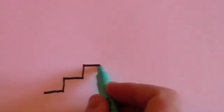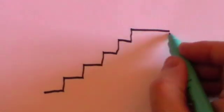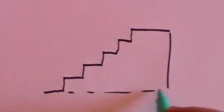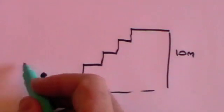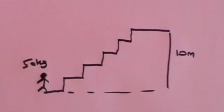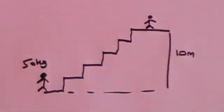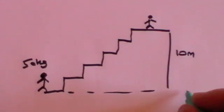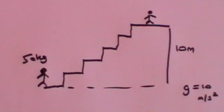Here's another example. This time you're going to climb the stairs until you are 10 metres above ground level. So you start off at ground level. Again, you're going to have a mass of 50 kilograms, and we're going to get you all the way up to the top of the stairs. What power do you need to do that? G will be 10 metres per second squared, just to keep things simple.